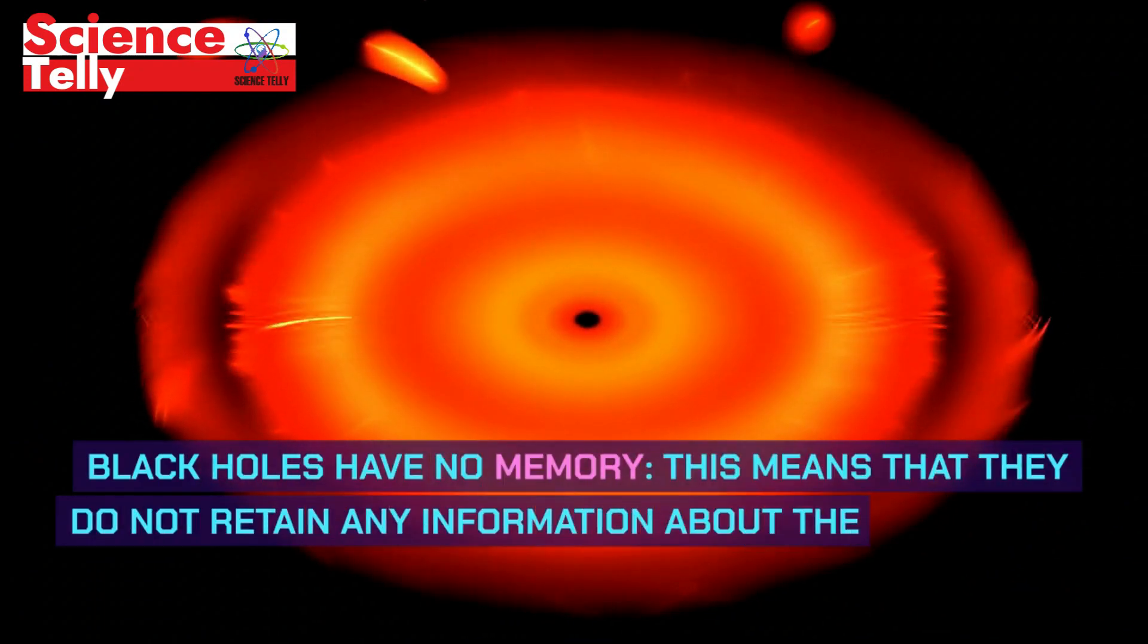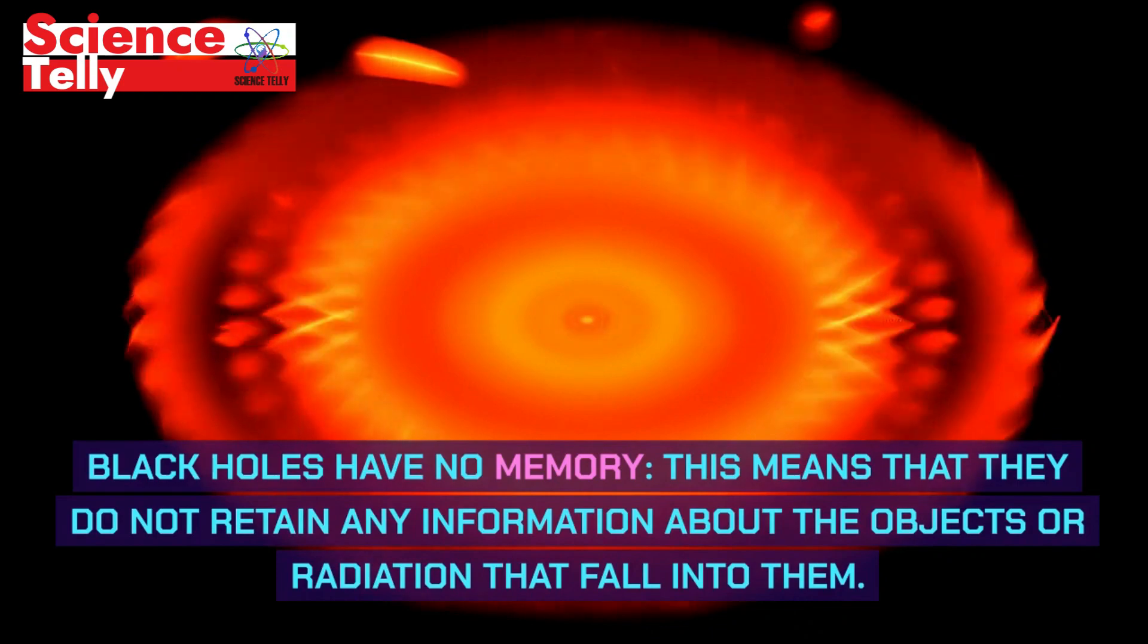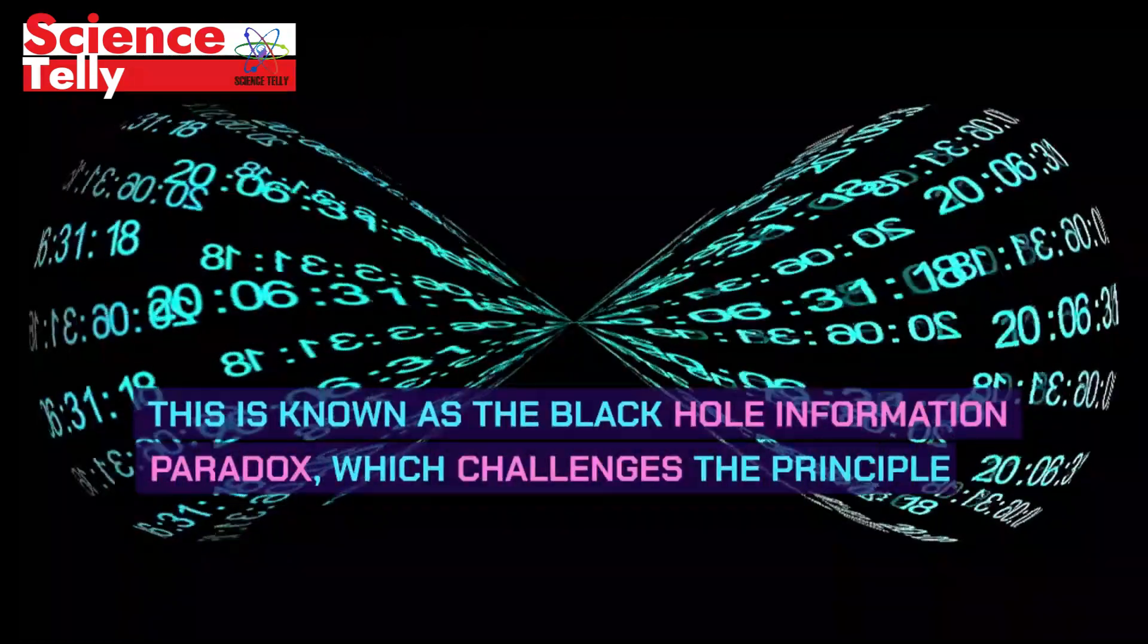Black holes have no memory. This means that they do not retain any information about the objects or radiation that fall into them. This is known as the black hole information paradox, which challenges the principle of quantum mechanics that says that information can never be destroyed.